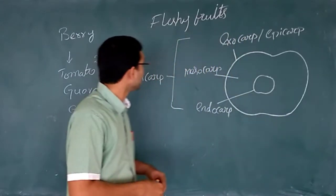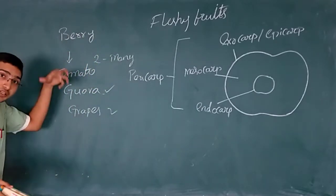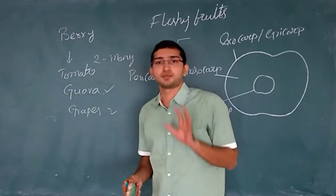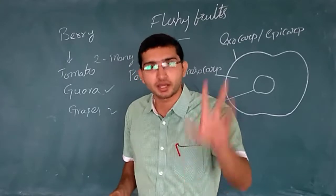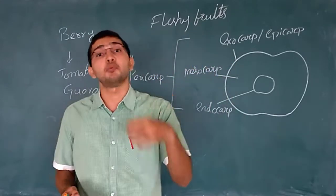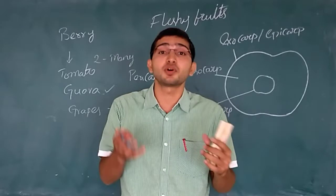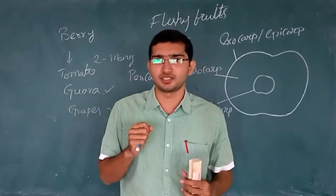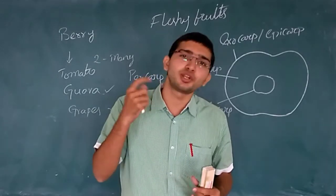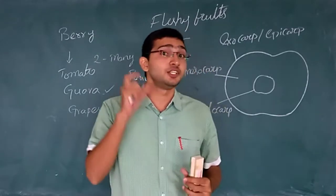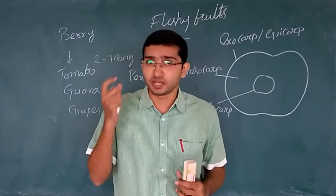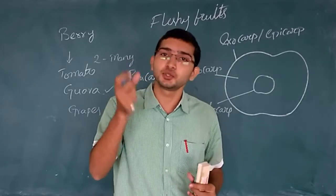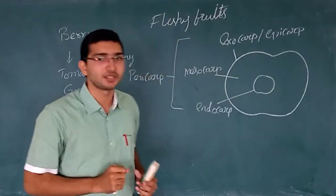So berries are composed of multicarpellary syncarpous ovaries, including tomatoes, guava, and grapes. In grapes you have two seeds — bicarpellary — while in guava you have multicarpellary with many carpels, which is why we find many seeds. Vitamin C is also abundantly found in these fruits, including tomatoes.